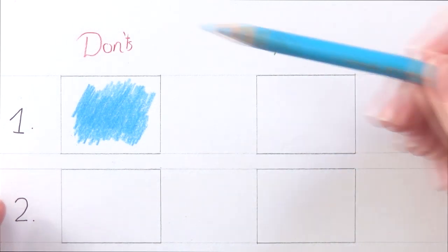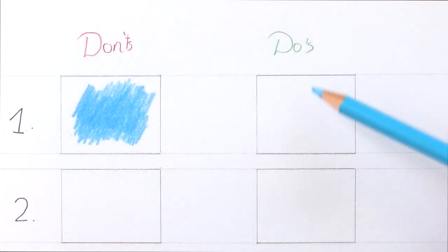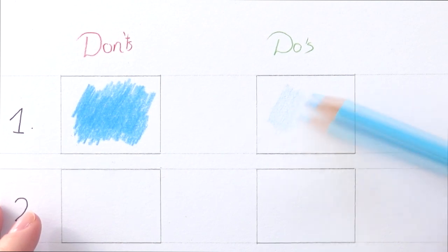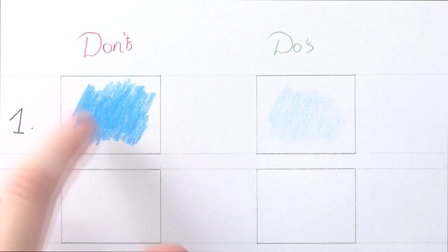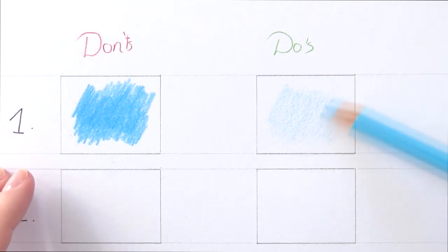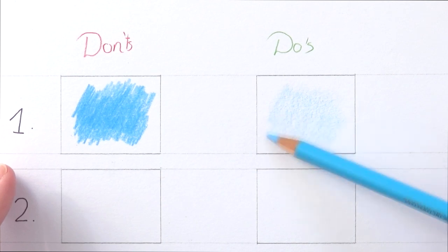So what you have to do is hold the pencil a bit closer to the end and this releases the pressure from the paper. And just start off with a light layer. And then you can build up the pressure as you go along. You can always go darker and you can always go heavier but if you start off this heavy you can't erase it anymore. And you can't add any colors on top anymore.